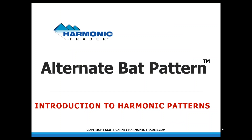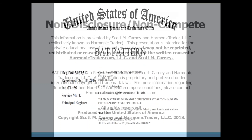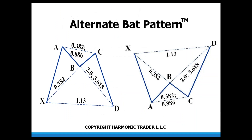Alternate BAT pattern — introduction to harmonic patterns. The alternate BAT pattern is a specific type of W and M structure that is particularly denoted by the B point. This is different than the regular BAT pattern. Most people are aware of the BAT pattern, but the alternate pattern has some different measurements as well.